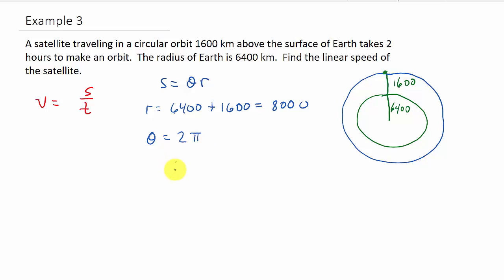So that gives me s is equal to 8,000 times two pi. So that's 16,000 pi. That's s. Alright. So now, let's go ahead and find our linear velocity. So that's s which is 16,000 pi over t.